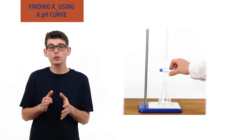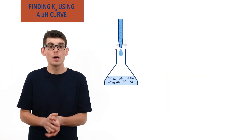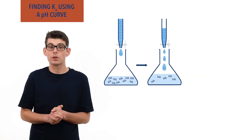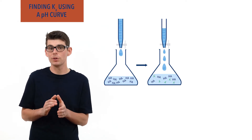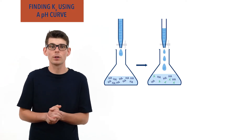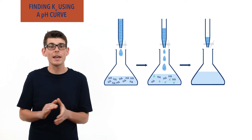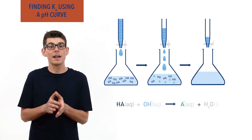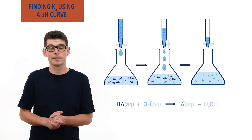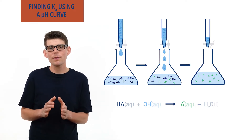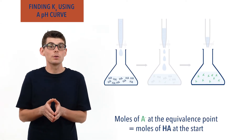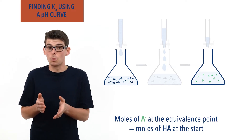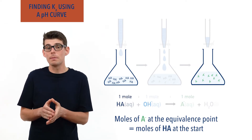As a strong base gets added to a weak acid in a titration, the concentration of the weak acid molecules, HA, will decrease, and the concentration of its conjugate base ions, A-minus, will increase. When the equivalence point is reached, there will be no weak acid HA molecules in the solution, and all of the HA will have reacted with hydroxide ions and formed conjugate base ions, A-minus. At this point, the moles of A-minus in the solution is the same as the moles of HA molecules that were in the solution at the start, as for every one mole of HA that reacts, one mole of A-minus gets formed.